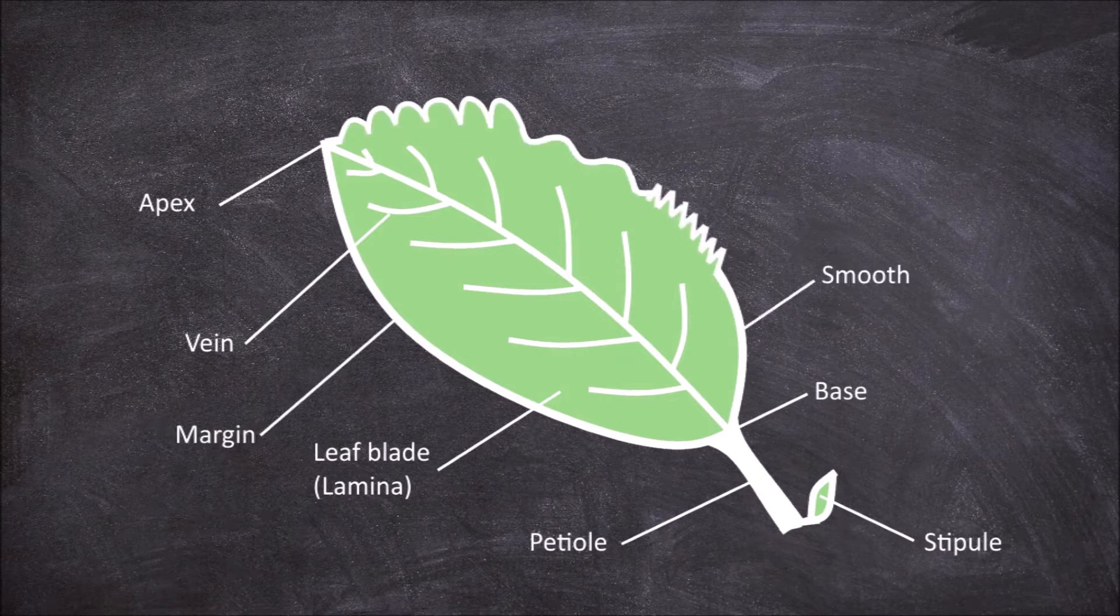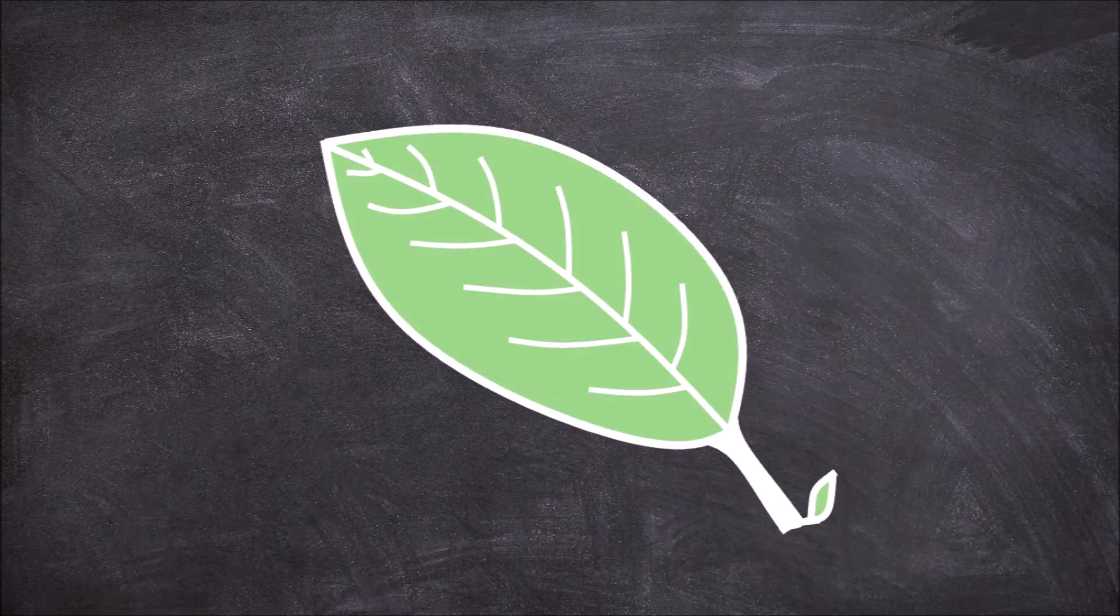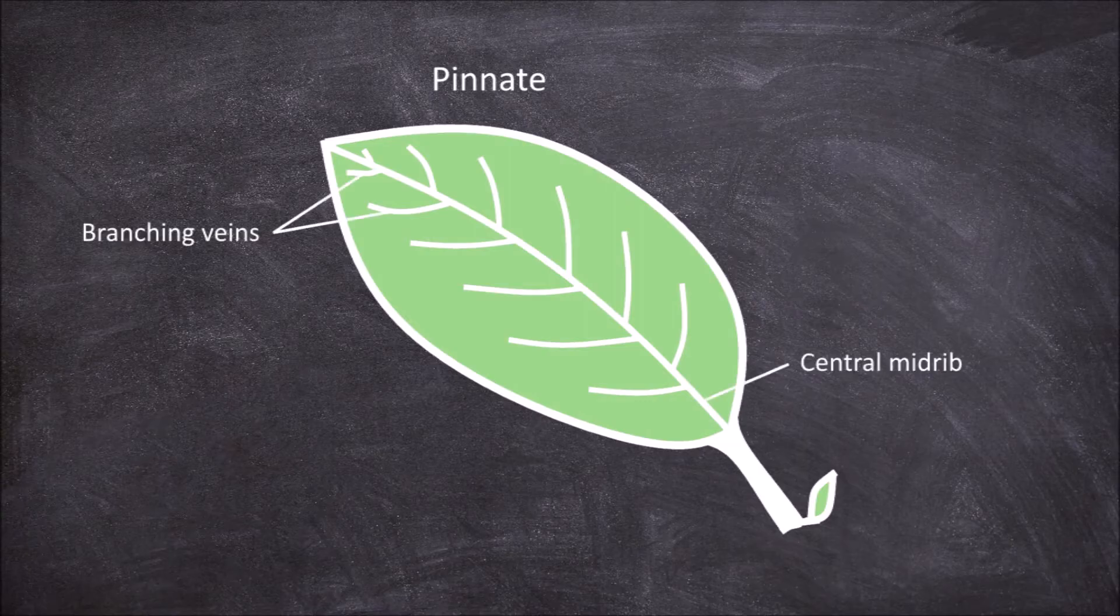The margin can be smooth, toothed, wavy or lobed. The venation can be pinnate like in this example with a central midrib that branches out like a feather.